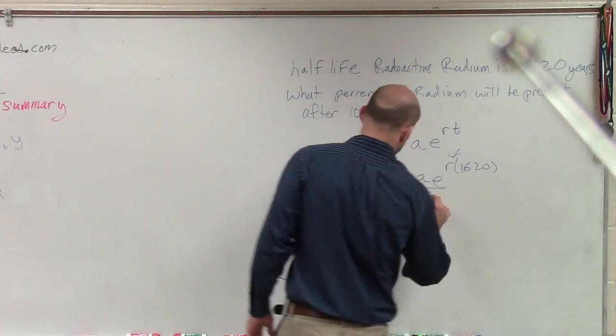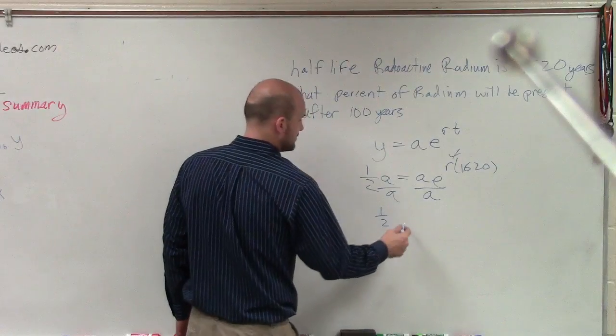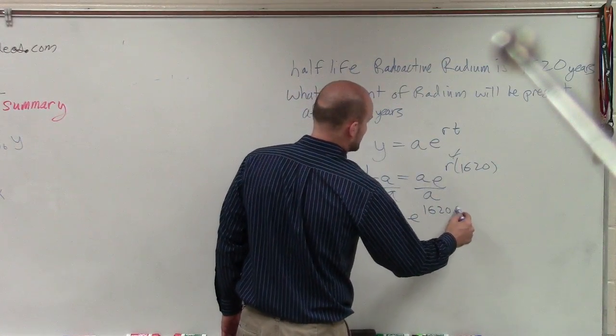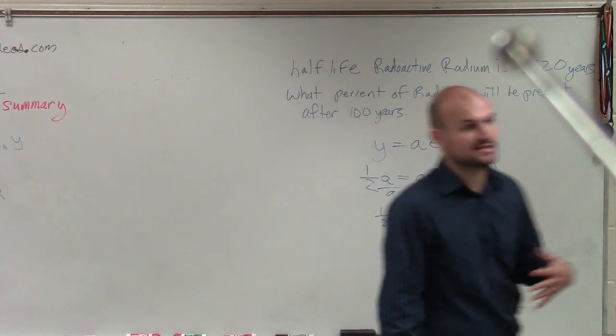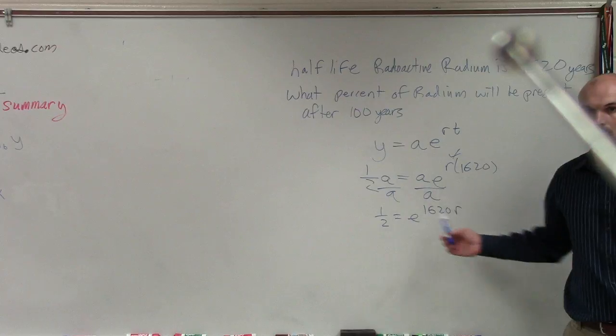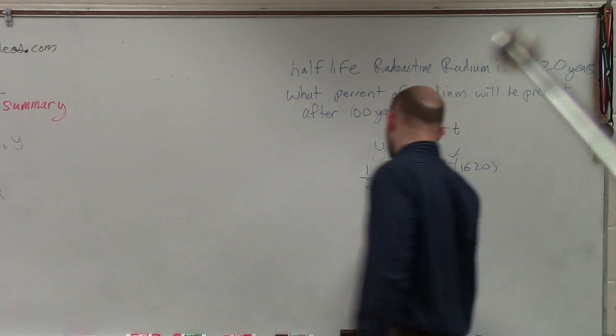But ladies and gentlemen, we wrote a as 1/2 a. So if I solve, I can divide by a. So therefore, now I have 1/2 equals e to the 1,620 r. Now, this is going back to problems that we did like last class period. How do you solve when you have this on both sides? You can take the natural logarithm of both sides.